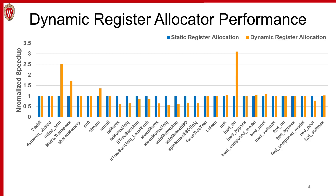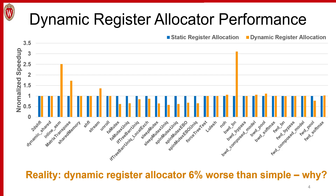Unfortunately, when we started examining the behavior of this scheduler across a number of applications — where the y-axis is normalized speedup versus the blue static scheduler, and the orange is our new dynamic register allocator — the bottom line is: although the dynamic register allocator helped in some cases, up to 3x for example with the backward pass of batch normalization, there were also cases where it hurt performance by up to 50%. And overall, the GeoMean speedup was 6% worse than the simple static scheme, which is not logically what we expected to see.